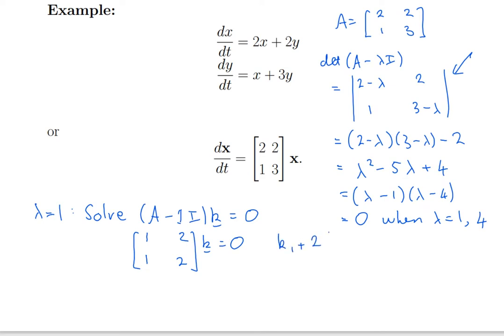If you write out those two equations, I get k1 plus 2k2 equals 0 in the first row, and k1 plus 2k2 equals 0 in the second row. Two equations and two unknowns, but you notice that the second equation is redundant. It's the same as the first equation. I could just ignore it, and this will always happen. Because I've chosen lambda to be an eigenvalue, that matrix is always going to be non-invertible, which means when you row reduce it, you will always end up with a zero row, and I will always be able to just ignore that second row.